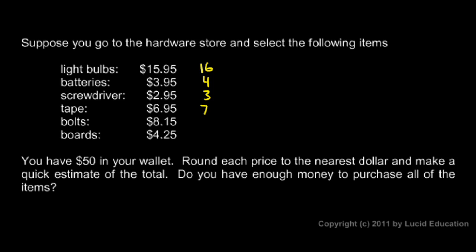$8.15 will round down to 8, and $4.25 will round down to 4. And we want to add these up, so let's add them up. The 16 and the 4 together give me 20.